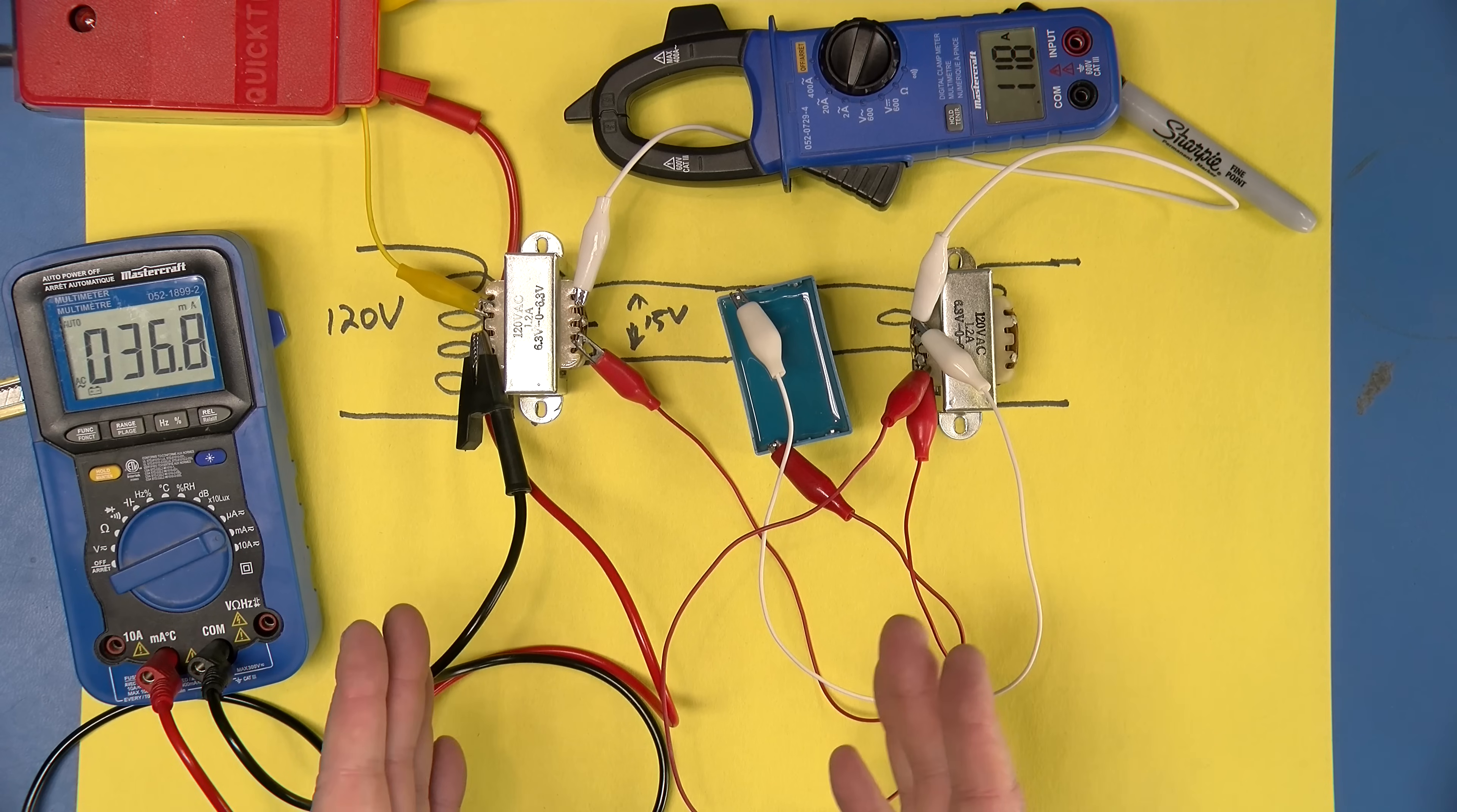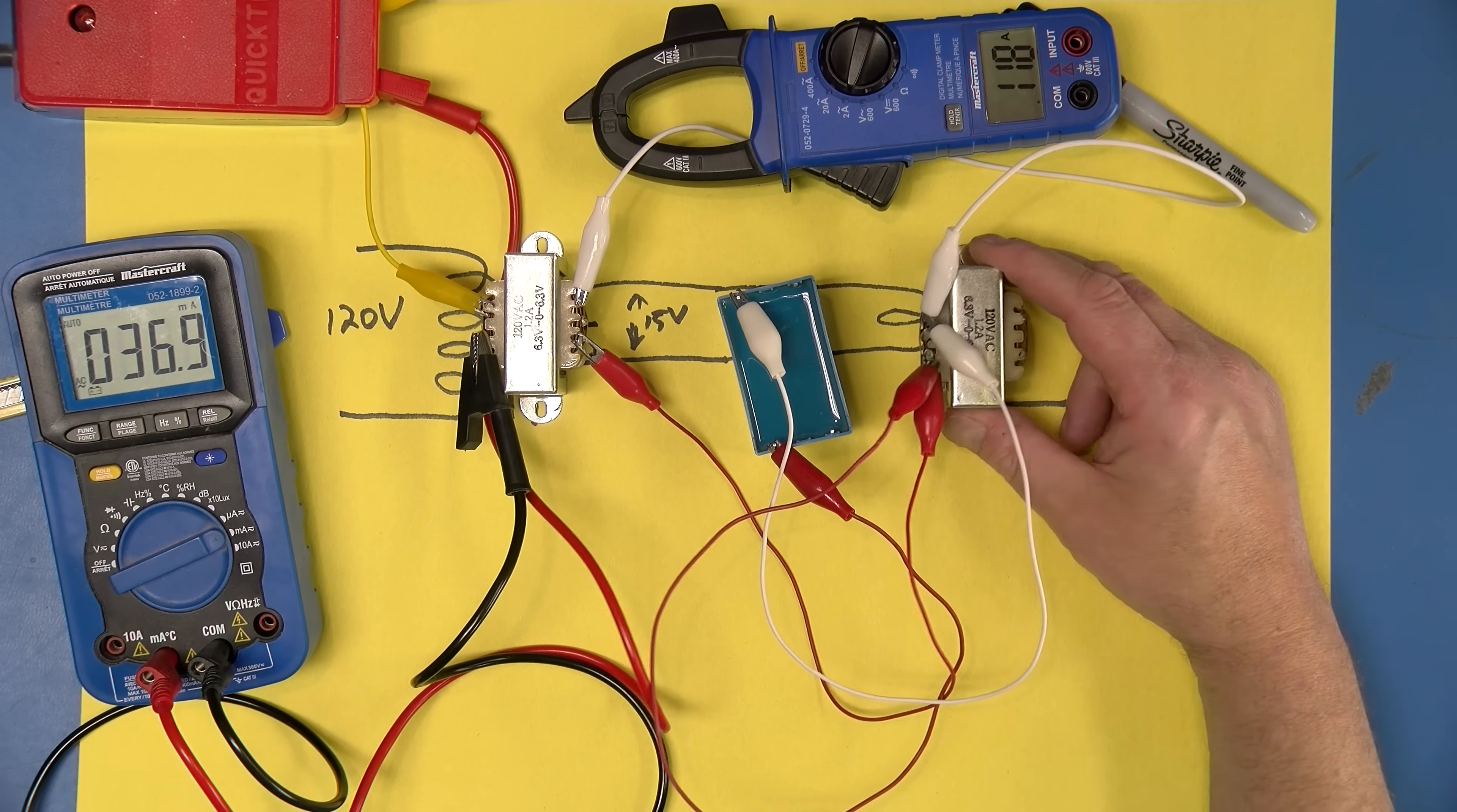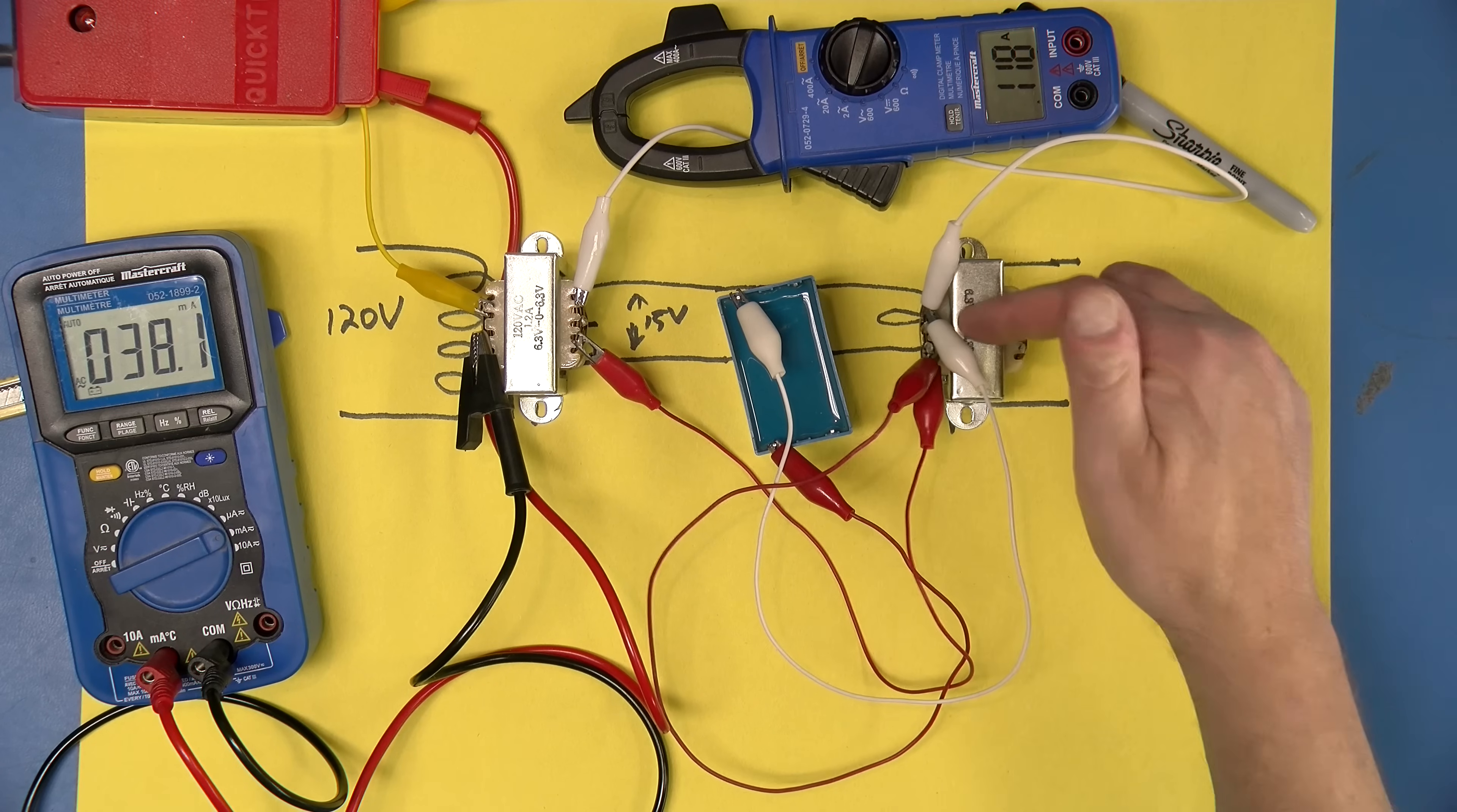So that will somewhat alleviate the problem, but not completely. We can't make this second current completely go away, because no matter what we do in terms of trying to cancel out the inductive current of this transformer, there will always need to be some real current to supply the power losses in there. And indeed, it turns out that the capacitor I've selected is about right to largely get rid of the inductive current, but still leaves the real current carrying the lost power to this transformer.